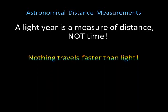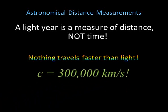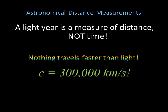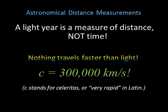Nothing travels faster than light — it's the universal speed limit, and it's a constant. The speed of light is 300,000 kilometers per second. Because it's a special number, it gets its own special letter: the speed of light is denoted by the letter C, which stands for celeritas, Latin for rapid or swift.